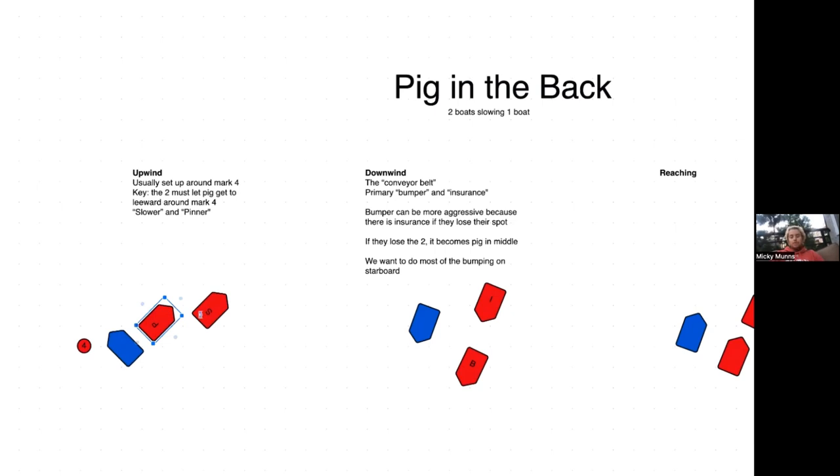So what do we do? Well now we got to reset the double team. This is what the pig wants, this is not what we want. So now we will basically switch roles. The pinner is now going to try to drop down in front, and the slower is going to try to drop down in front. They now become, you know, the roles reverse basically. The slower becomes the pinner and the pinner becomes the slower.